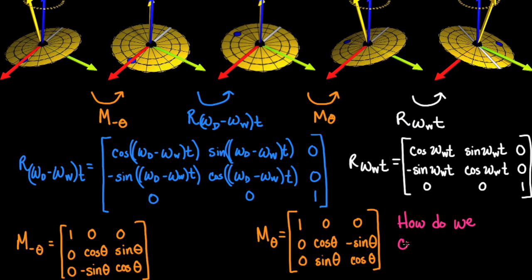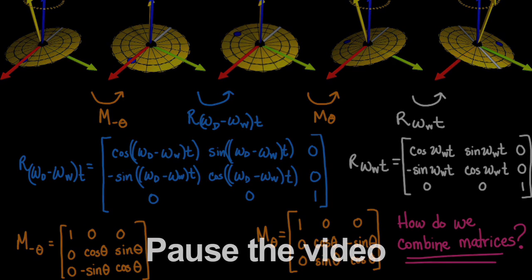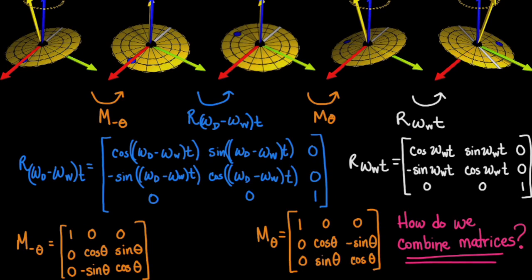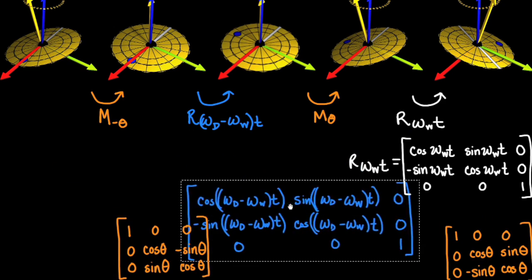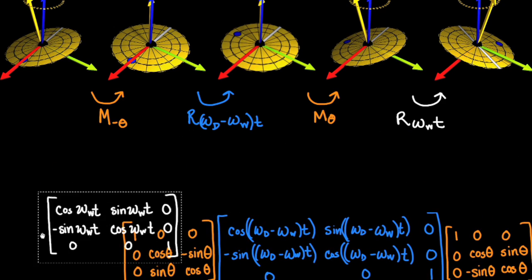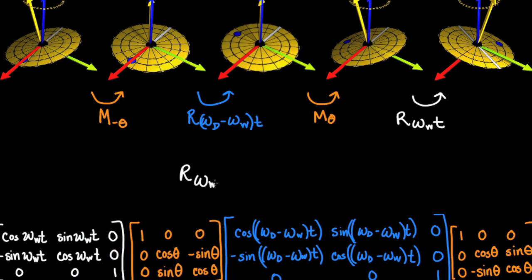How will we combine these matrices to describe the motion of the marked point? Pause and discuss. We multiply the matrices together. The order we apply each matrix matters. We must perform the rotations in the same order we decompose the motion, because matrices do not multiply commutatively.